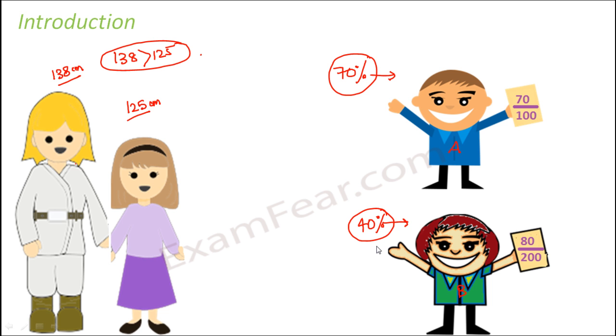Now if you know the percentage scored by A and B, you can very easily compare who scored more. So what can you say? Who scored more? Obviously, A scored more.